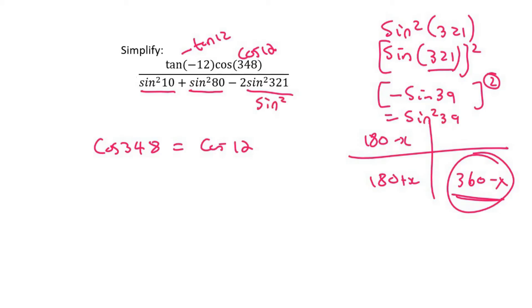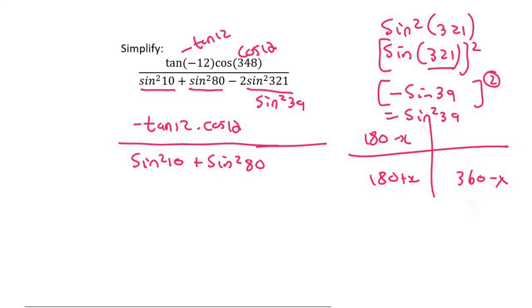So sin squared of 39. And so now we can go rewrite everything as negative tan 12 times by cos 12 over sin squared of 10 plus sin squared of 80 and then minus 2 sin squared of 39.